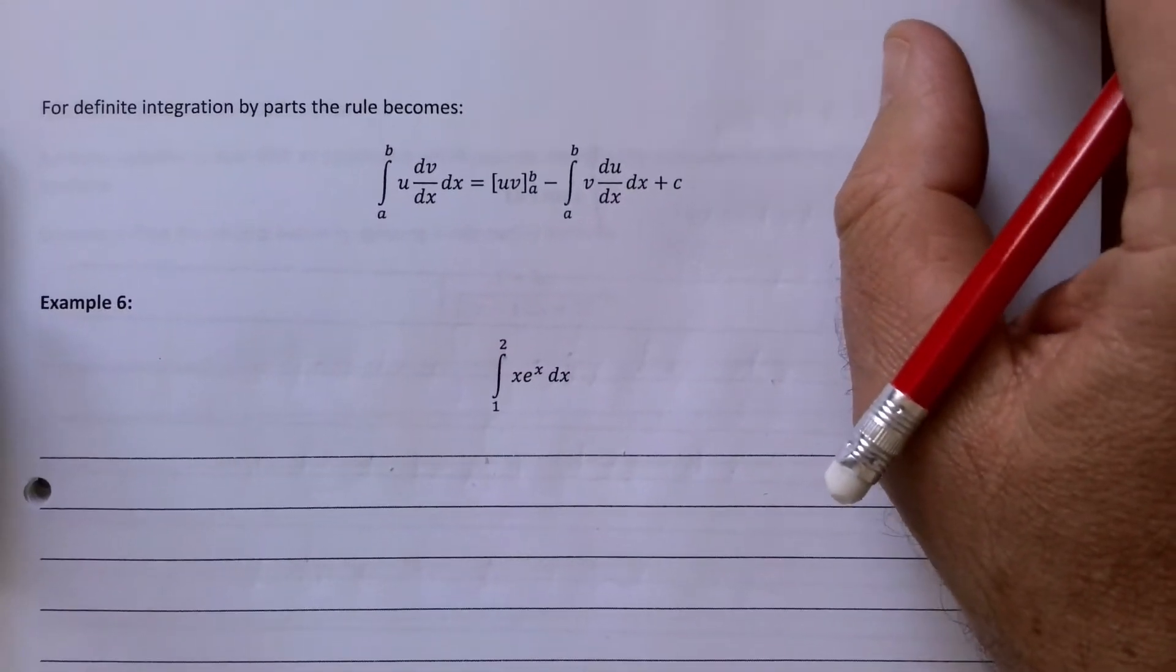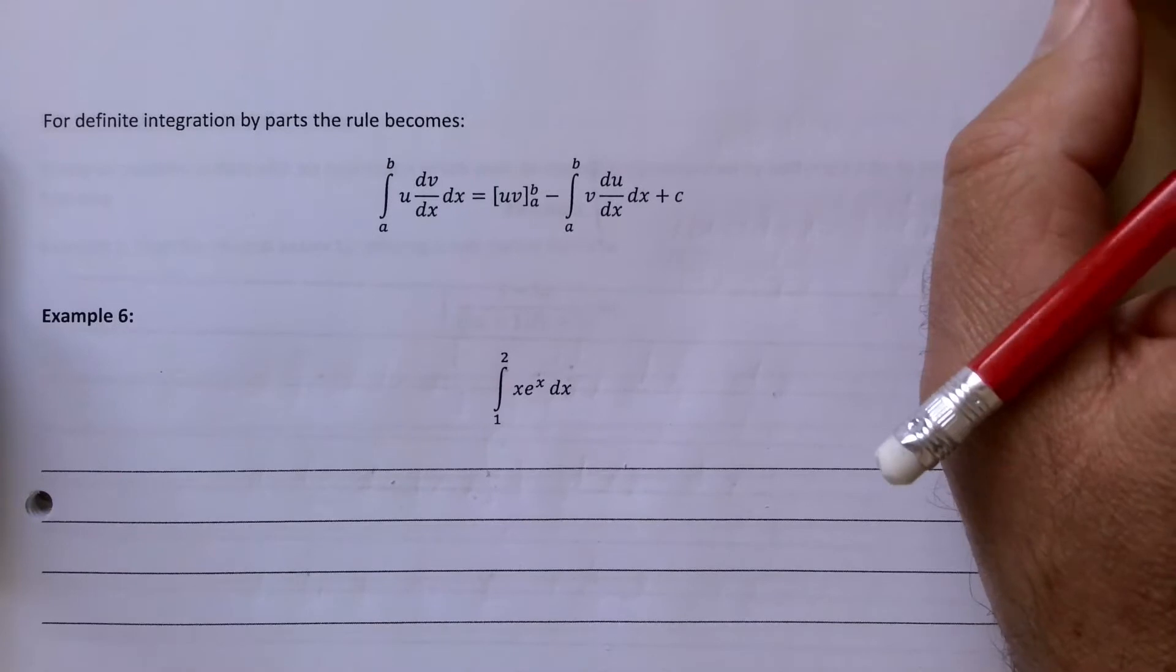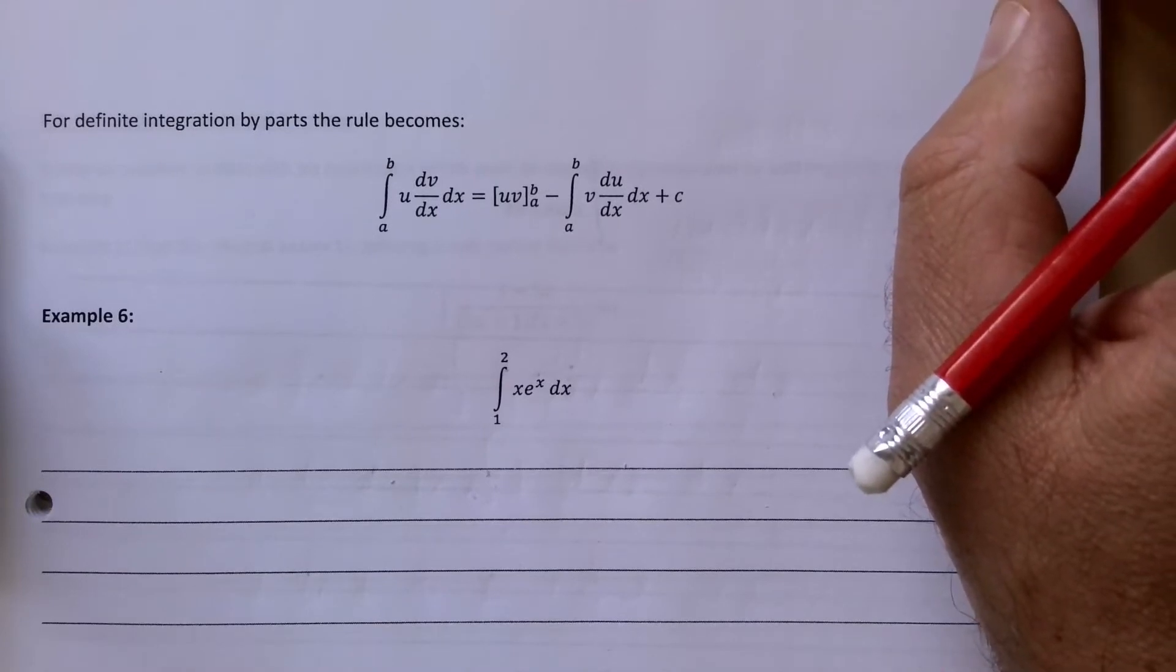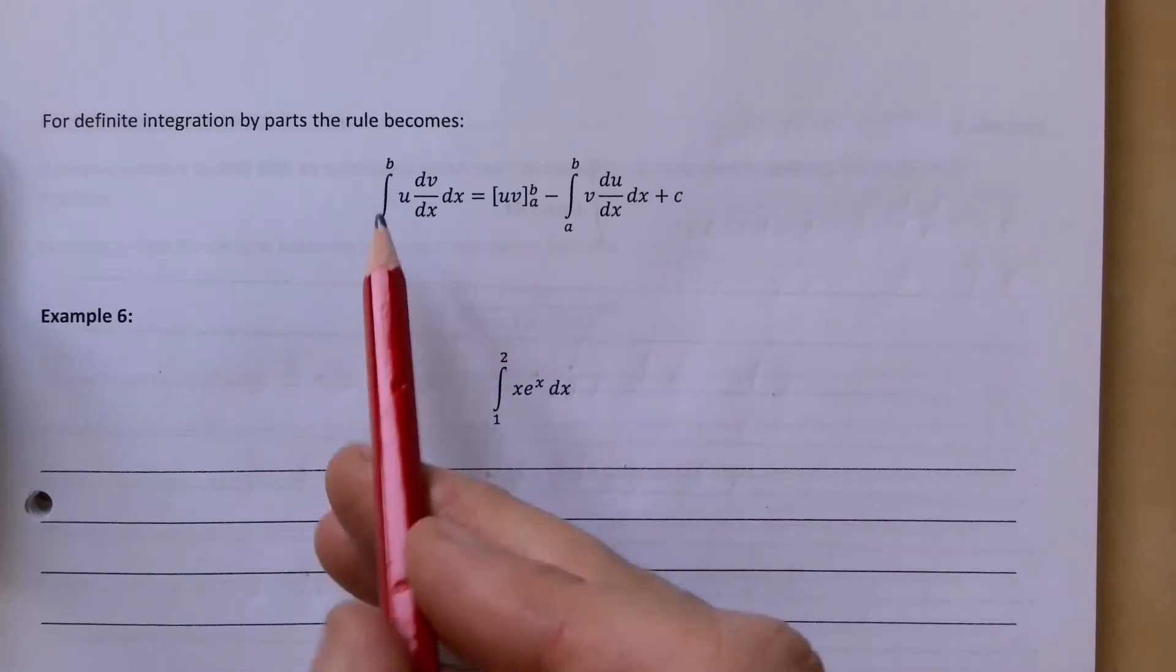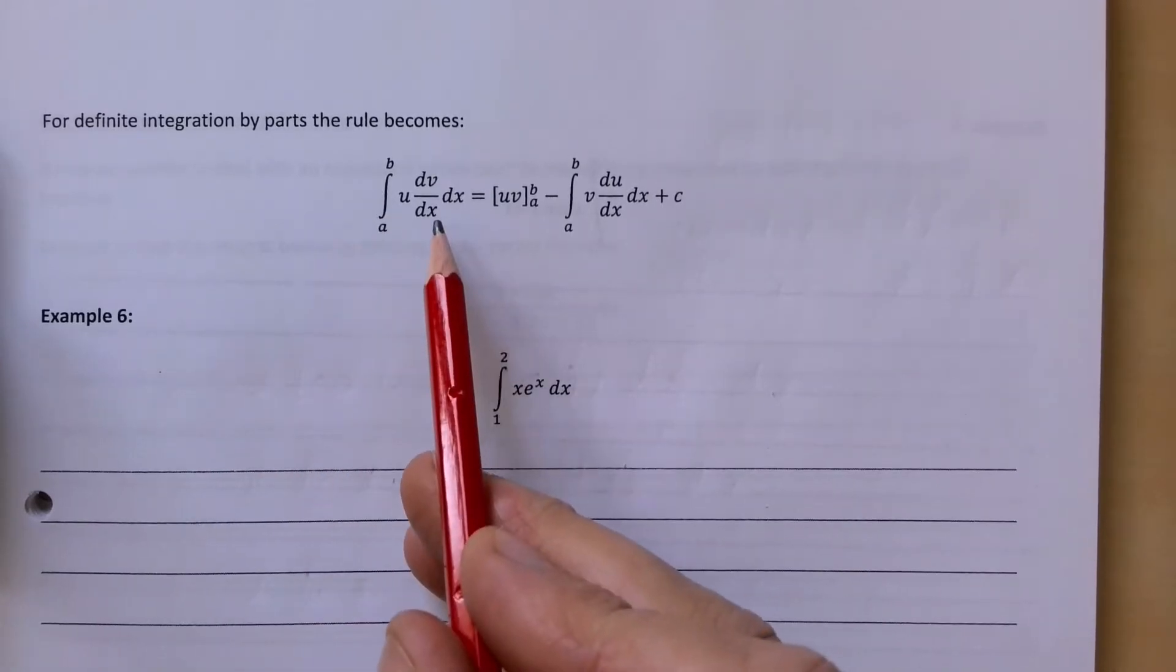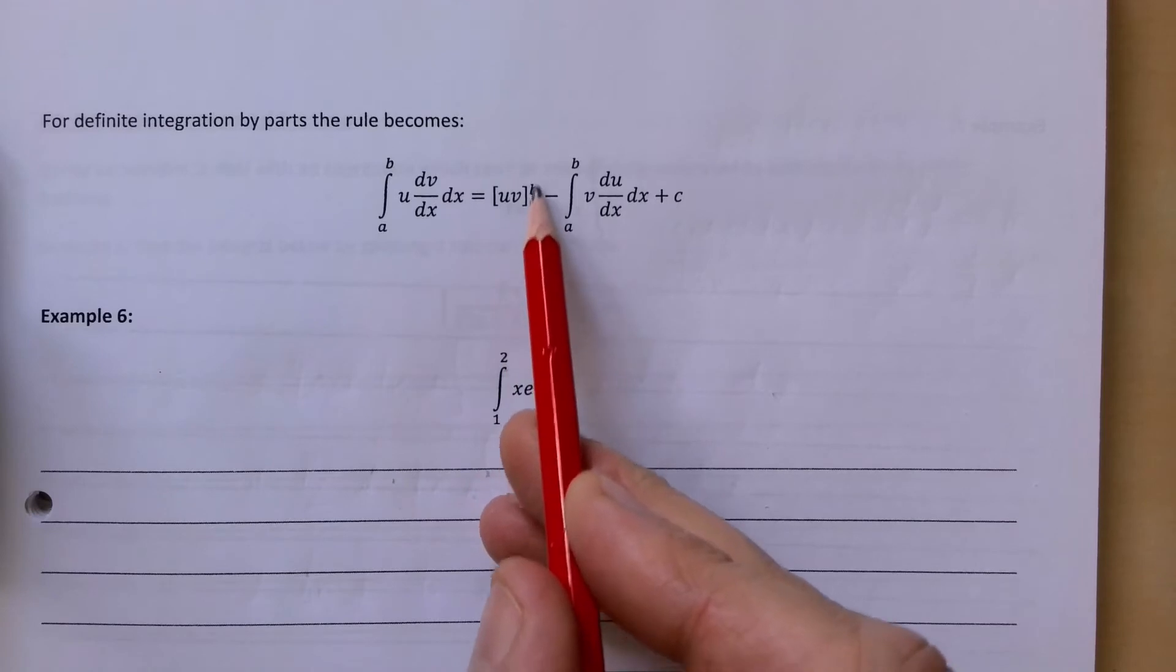This is A2 Pure, Unit 4 Integration. We're looking at integration by parts. A previous video went through a few examples of integration by parts, and here we're looking at it for definite integration. If you're doing a definite integration looking for a value out of it, it's going to be the UV.